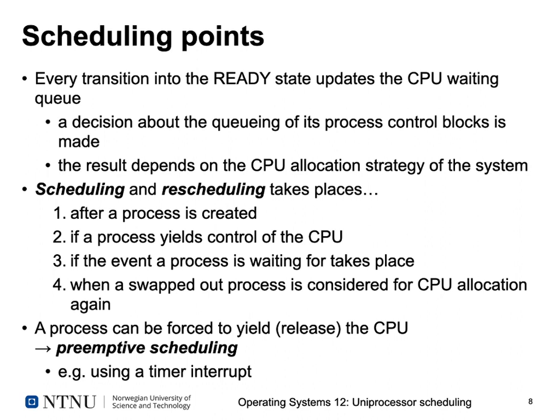We have two different approaches to giving up control of the CPU. Cooperative multitasking means a process has to actively give up control. Preemptive multitasking means a process can be forced to release the CPU — this is what preemptive scheduling uses. For preemption, we usually need hardware support, for example a timer interrupt that interrupts the currently running program with a certain frequency like every 10 milliseconds, invokes the operating system, and allows it to change the CPU scheduling.